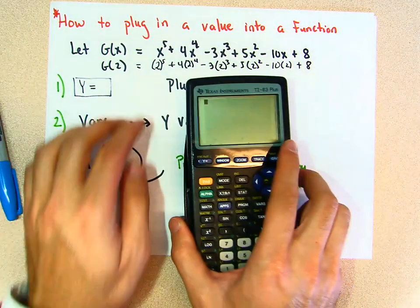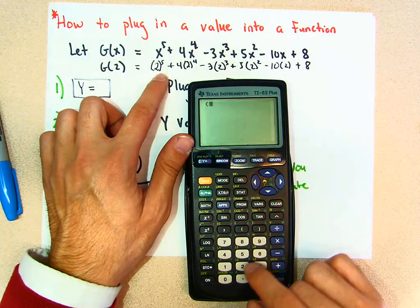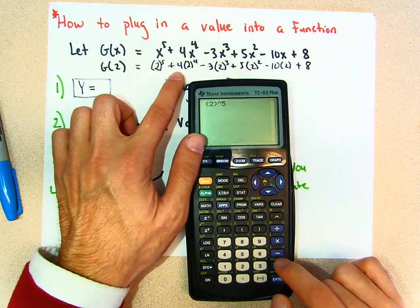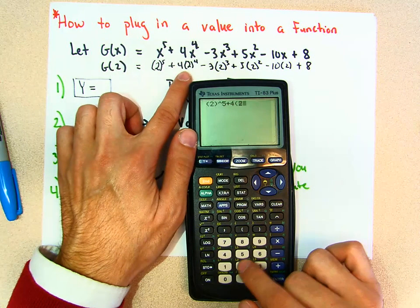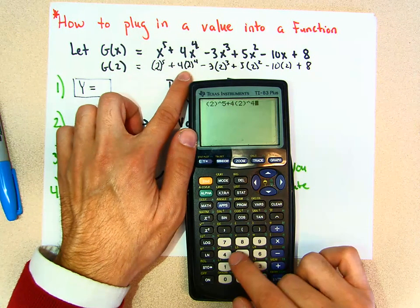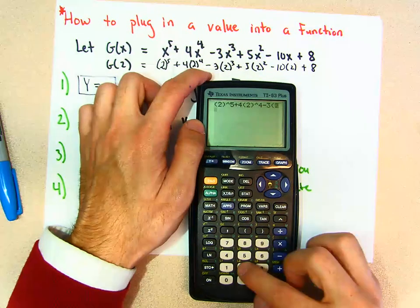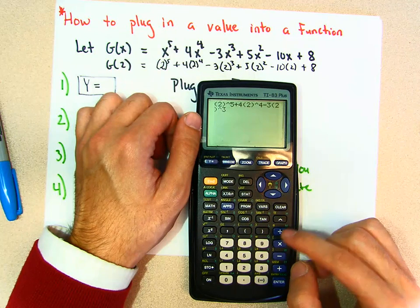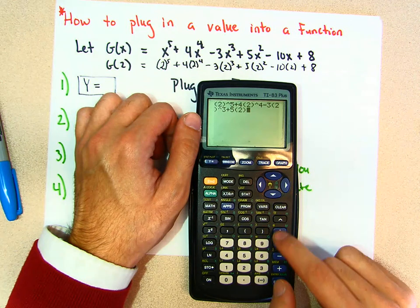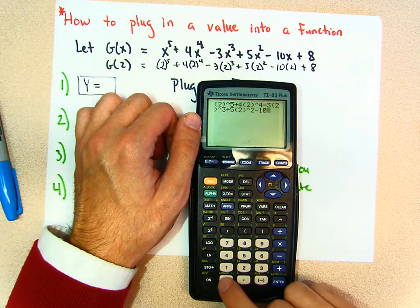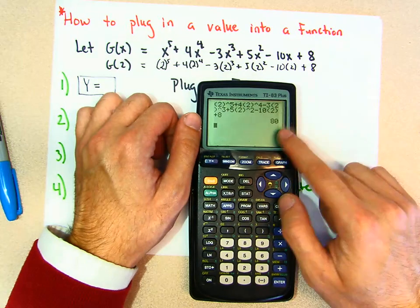With your calculator, you can do it with parentheses: parentheses two close, to the fifth, plus four times parentheses two close, to the fourth, minus three times parentheses two close, to the third, plus five times parentheses two close, squared, minus 10 times two, plus eight. And that whole expression equals 80.